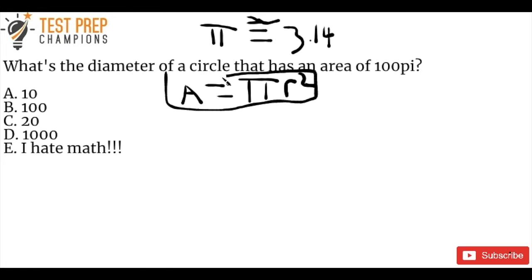There's one other formula that we need to know before we can jump in here, and that's that the diameter, which we'll call d, is equal to 2r, or twice the radius. So the diameter of a circle is twice as big as the radius.